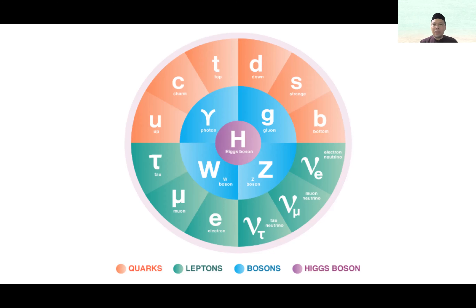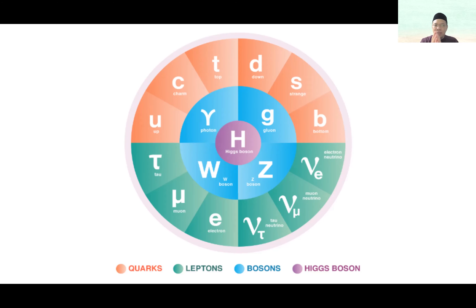There is a fourth particle called the graviton, which is still theoretical — something that has not been found yet. Some scientists say there is no such particle; some say it might exist. So gravity is a force that scientists cannot fully understand: is it just a force without a particle, or is it a force with a particle? If it is a force with a particle, then we can have the anti-particle.